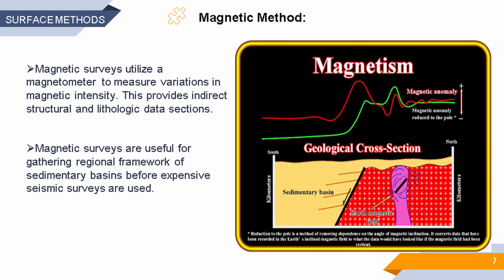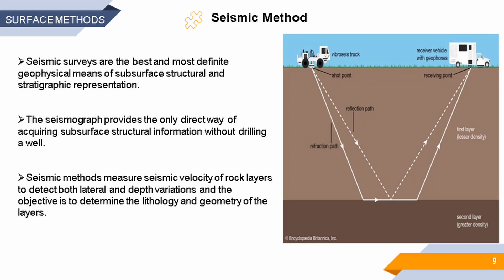Moving on to the magnetic method: it measures the spatial variations in the strength of the magnetic field. The operative physical property is the magnetic susceptibility and remanence. This figure depicts the main principle of the magnetic method. Magnetic methods are widely used in petroleum exploration, engineering borehole, and global geophysics.